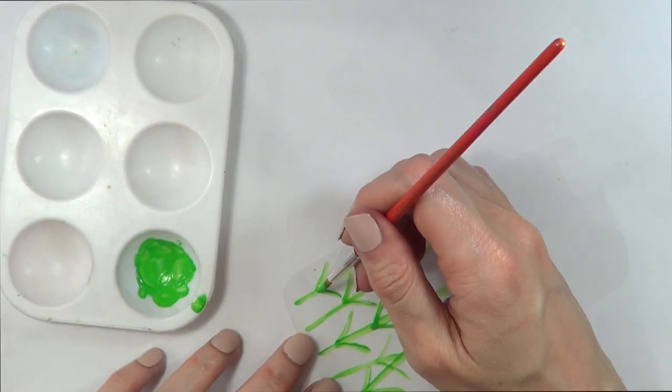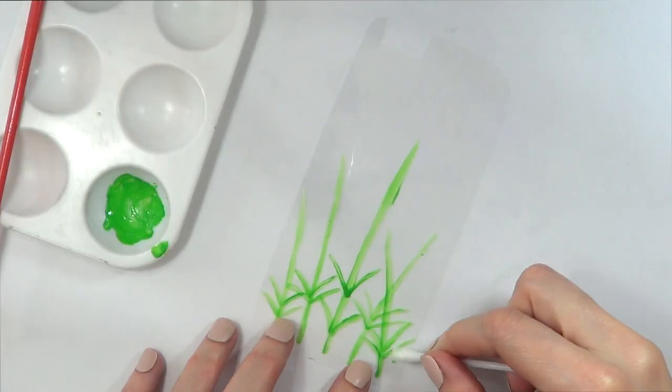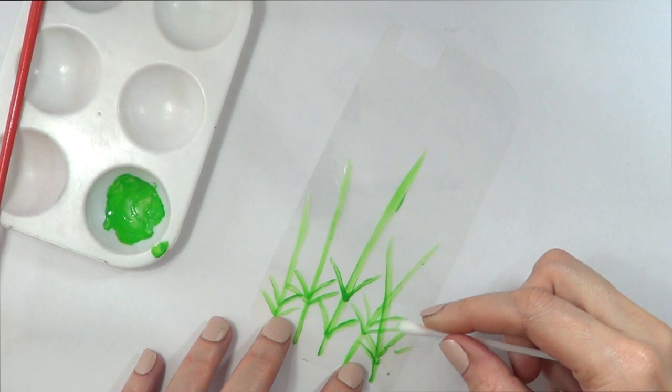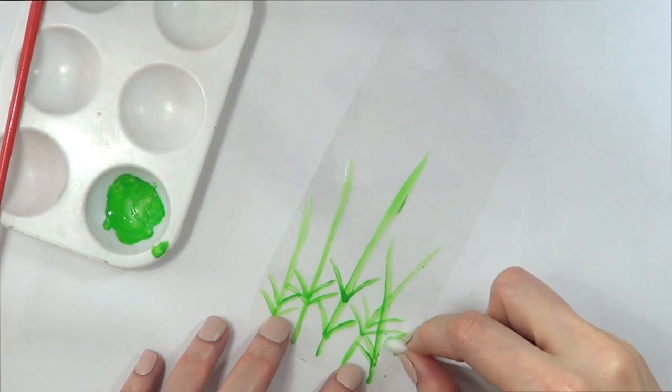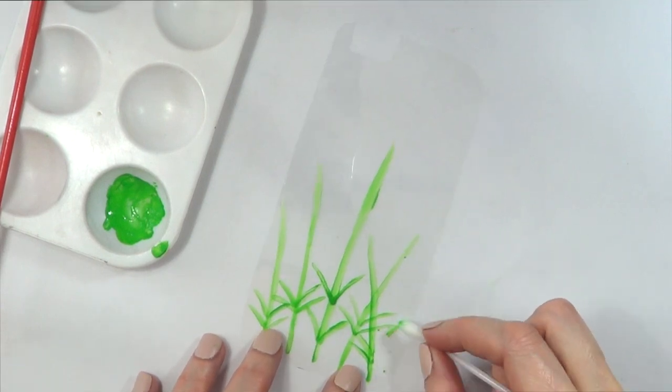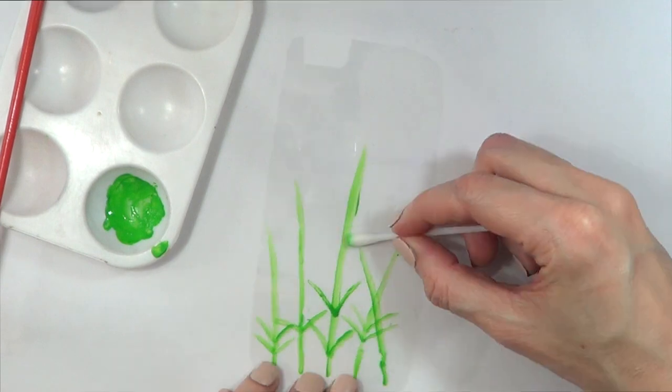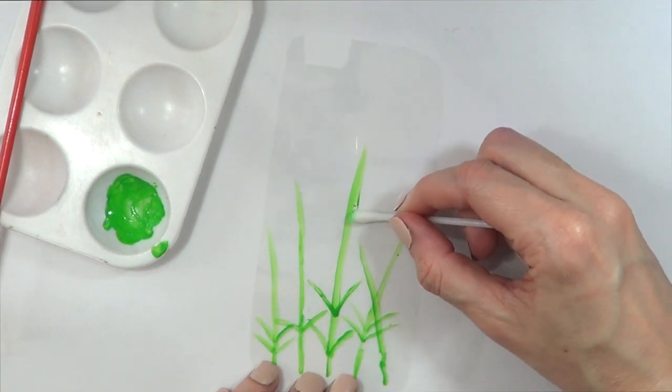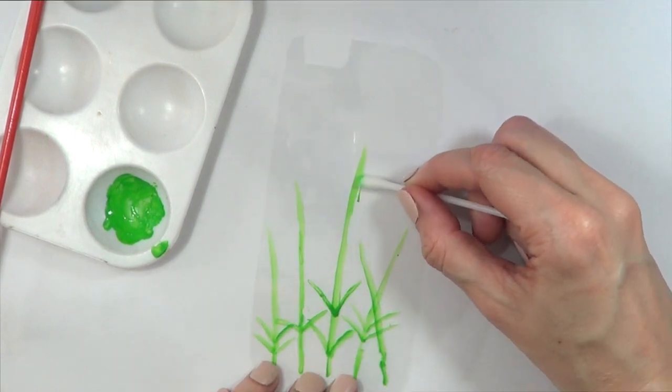And as you can see in some of them, I added two of those, but I ended up not liking what it looked like. So I just removed that with a Q-tip and some water. At this point, these were dry. So this is just to show you that you can remove them once they're dry. Again, use some cotton and water.